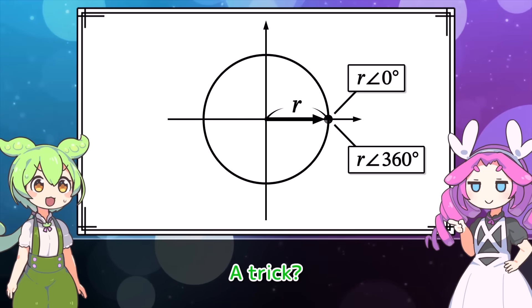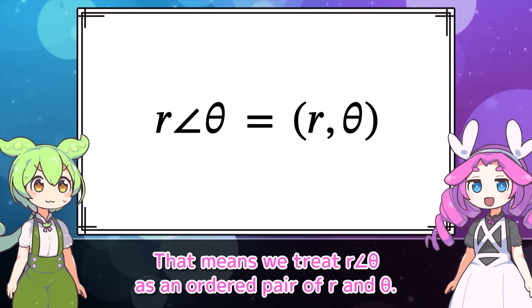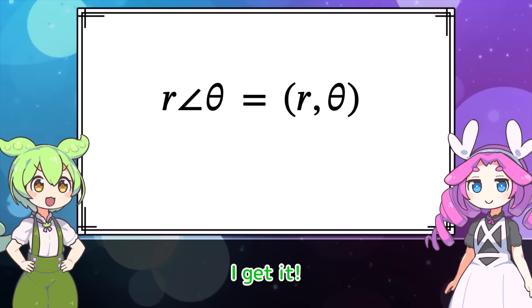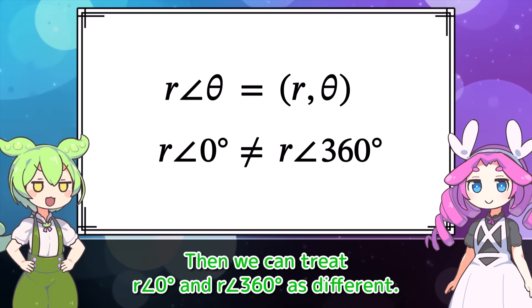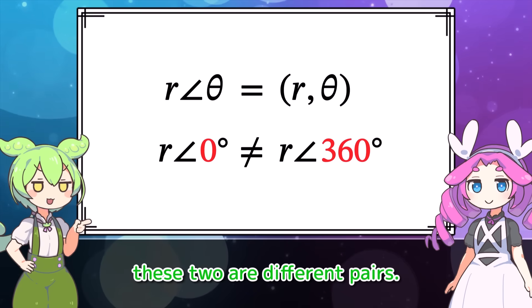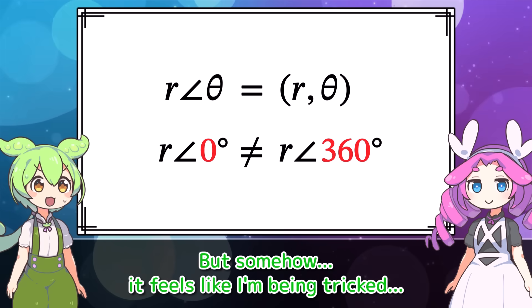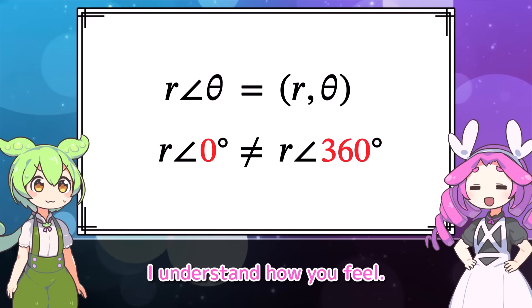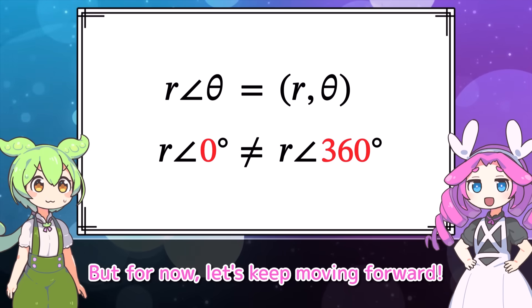And if we rotate it 360 degrees, it becomes r∠360°. These two represent the same point on the plane, but what if they were different points? Wait, is it even okay to think like that? How fascinating. Let's use a little trick here. That means we treat r∠θ as an ordered pair of r and theta.